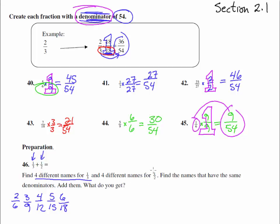And four different names for one-half. Let's do the same thing and put it in a different color here. One-half is two-fourths, three-sixths, four-eighths, five-tenths, six-twelfths. So we've got a whole bunch, I actually got like five different names for them and that's okay.